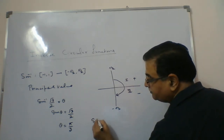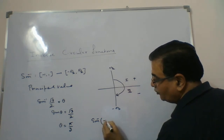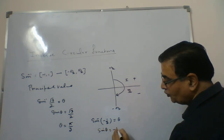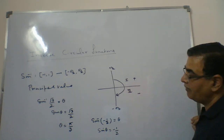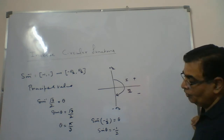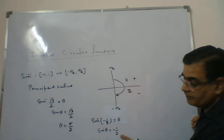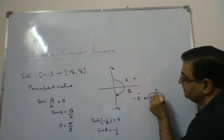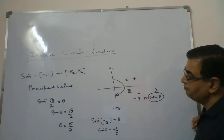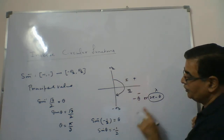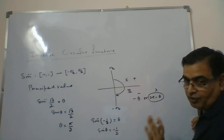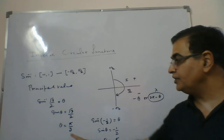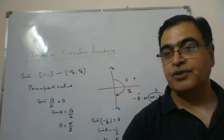Another example: sine inverse of minus half. When you think about minus half, take this as theta. Then sine theta equals minus half. As it is negative, it will be in quadrant number 4. Half corresponds to pi by 6, but since we take angles from minus pi by 2 to pi by 2, we take minus theta. So theta is minus pi by 6. The principal value here is minus pi by 6.